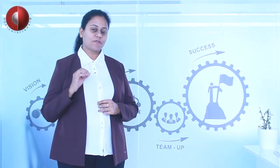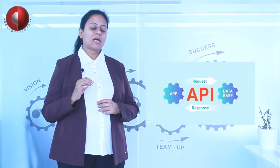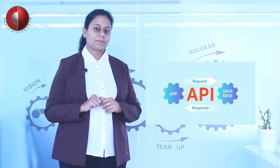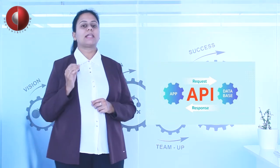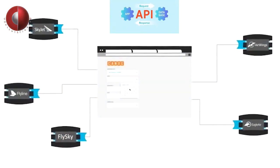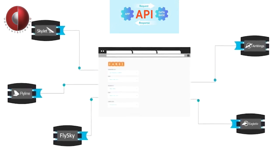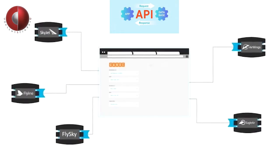An API is a piece of code which is used to establish a connection between two softwares. For example, if you want to book an air ticket on a travel app, the request is sent through the airline software or airline database in the form of an API request.